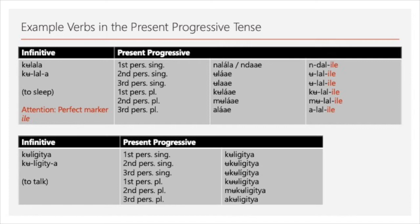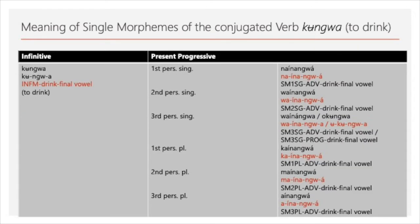Probably what you can say is that maybe the morpheme after the infinitive marker is the stem without the final vowel, because the vowel differs in the case of 'kulala'. Now I'd like to go into more detail with one verb and explain the individual morphemes. I'll start with the infinitive: 'kungwa', where 'ku' is the infinitive marker and 'mu' is probably the stem.